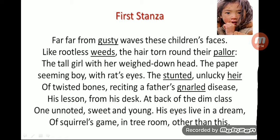The next line: 'the tall girl with her weighed-down head.' Here, 'head' is a part of the body representing the whole girl — that is synecdoche. Also, 'weighed-down' is an adjective that has been transferred from the girl to her head. Remember the triangle: the adjective 'weighed-down' is transferred from the girl to her head — so this is a transferred epithet.